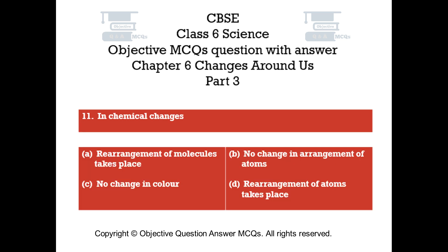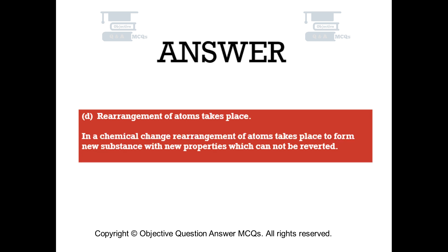Question number 11. In chemical changes: Option A, rearrangement of molecules takes place. Option B, no change in arrangement of atoms. Option C, no change in color. Option D, rearrangement of atoms takes place. The right answer is option D. In a chemical change, rearrangement of atoms takes place to form a new substance with new properties which cannot be reverted.